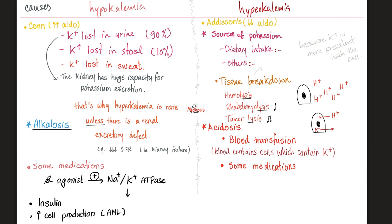Imagine I was starving and then suddenly ate tons of food. My body, which has been hungry for a while, will start making cells rapidly. Cell division requires potassium. This intracellular shift of potassium leaves less potassium outside, leading to hypokalemia. More importantly, it leads to hypophosphatemia, because I need phosphate to make ATP. All of those hungry cells are now fed and making ATP like crazy, consuming all the phosphate, ending up with hypophosphatemia.